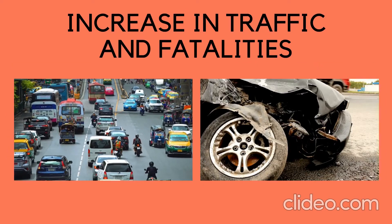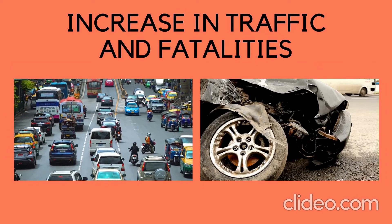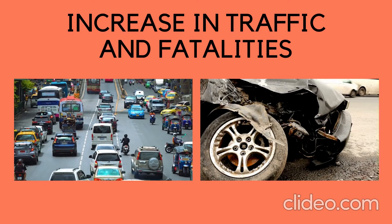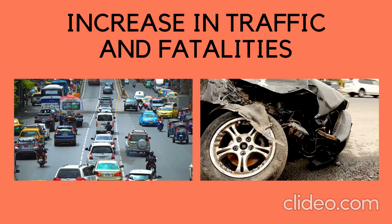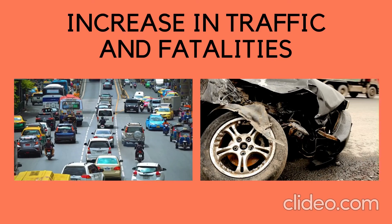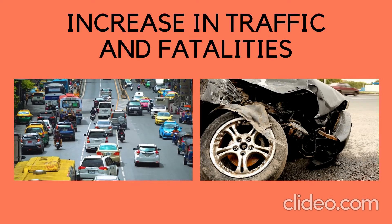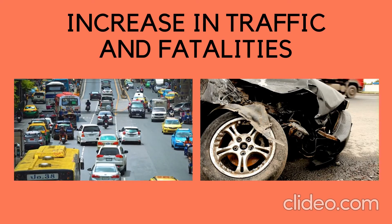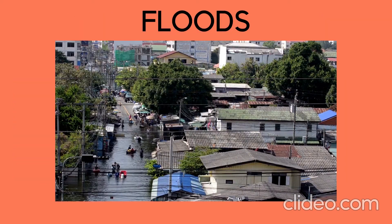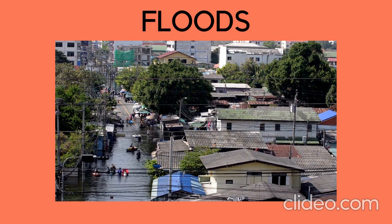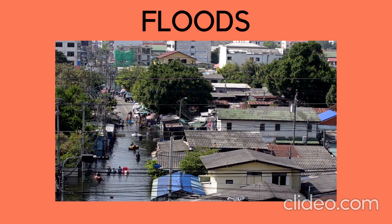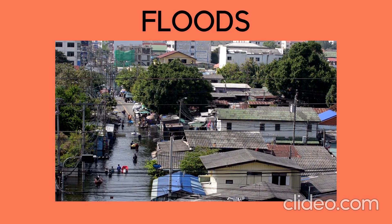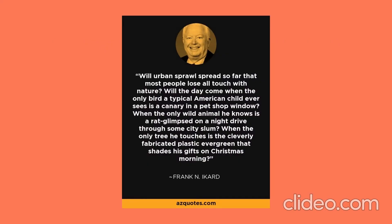Increase in traffic and fatalities: as urban areas spread out, our trips are lengthened. People spend more time in their cars, and not only does this cause more air pollution, but also traffic congestion and road accidents. Urban sprawl also destroys wetlands, which are really important for absorbing floodwaters, and floods cause a ton of property damage and even take lives.